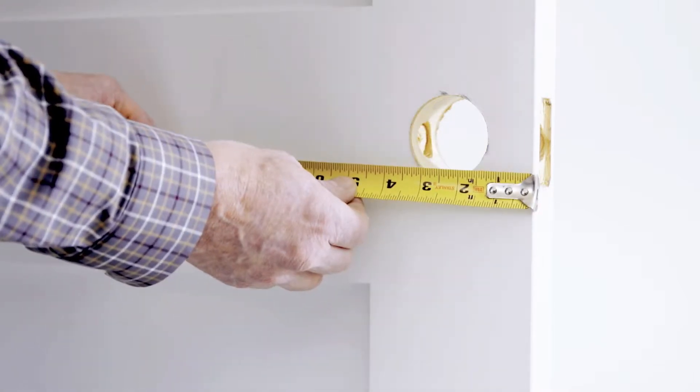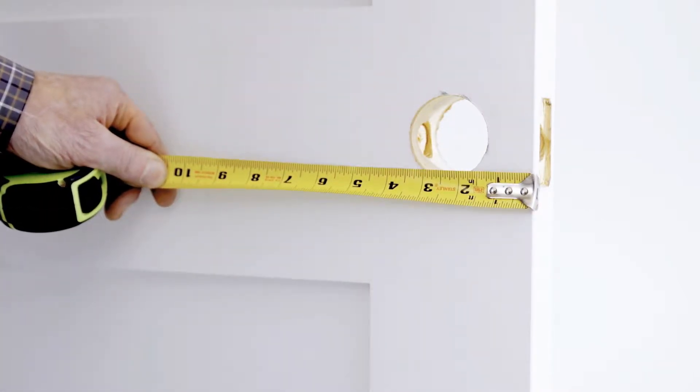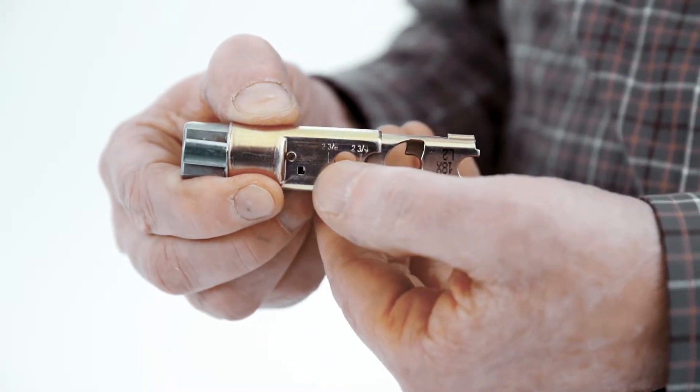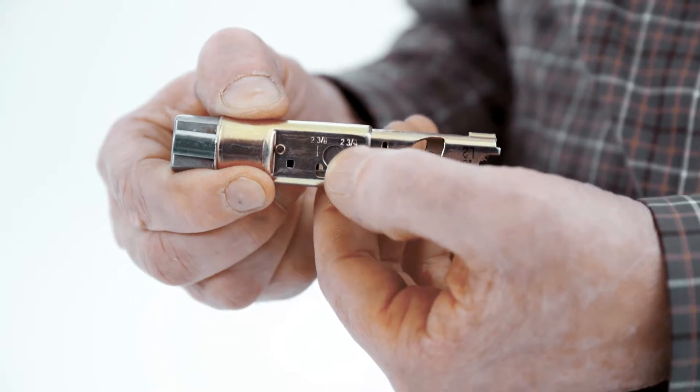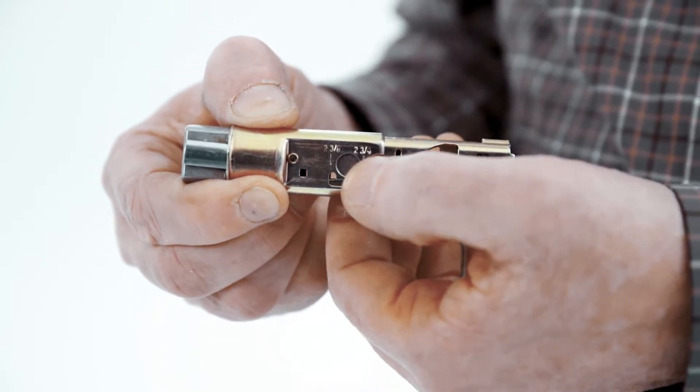Measure the backset of your door. If the backset of your door measures two and three-fourths inch, adjust the latch by grasping the spring pin and moving it to the two and three-fourths inch slot. For this install we will be using the two and three-eighths inch measurement.